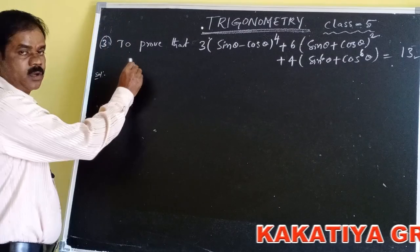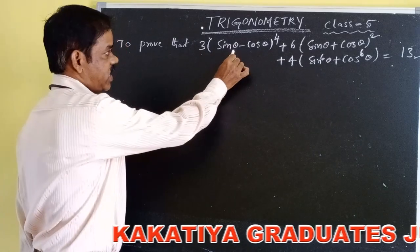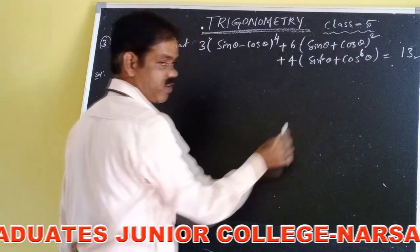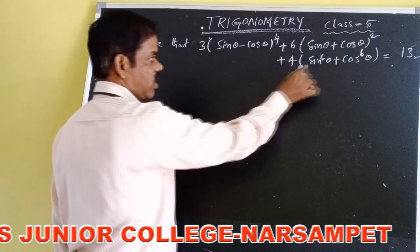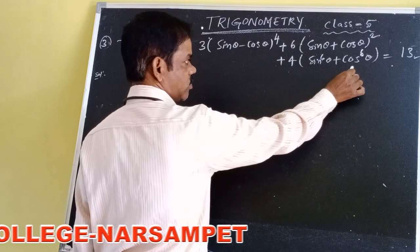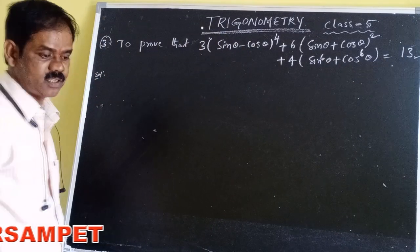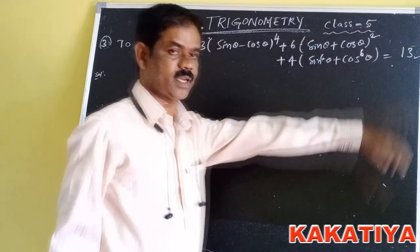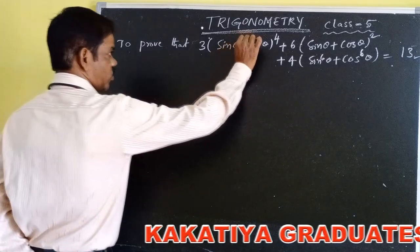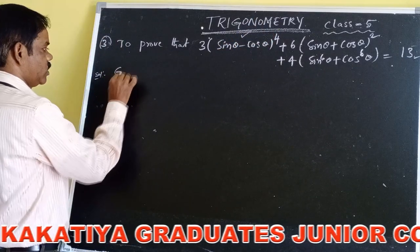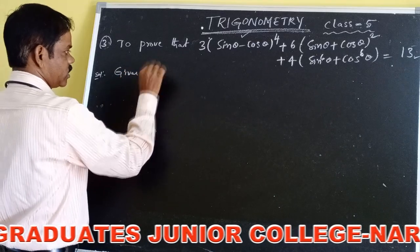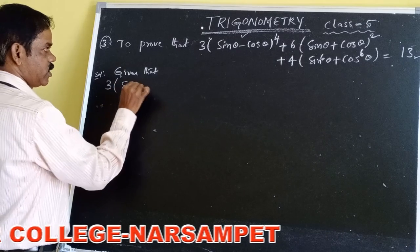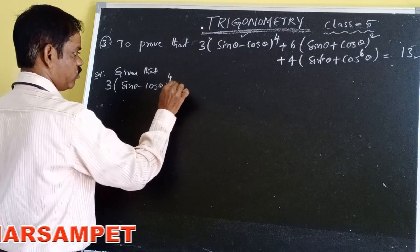Third proof problem: Prove that 3(sinθ - cosθ)⁴ + 6(sinθ + cosθ)² + 4(sin⁶θ + cos⁶θ) = 13. We have to prove the total LHS value equals 13. First, take the first term: 3(sinθ - cosθ)⁴.